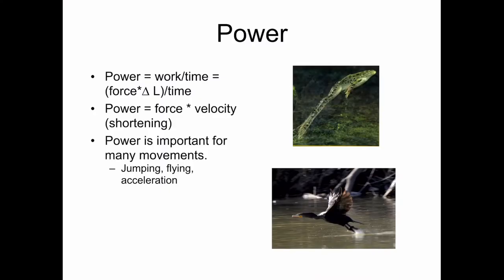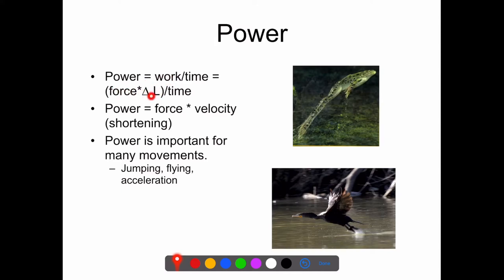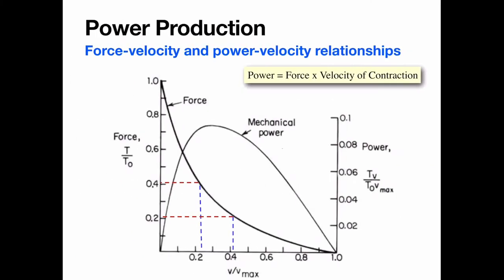In order to move, animals often have to generate power. Power is work over time, or the rate of producing work. Work is force times the change in length, or force times distance. Power is also force times velocity — you can think of this as the force of the muscle times the velocity of shortening. Power is important for jumping, flying, and accelerating, like when you start to run from a standstill.